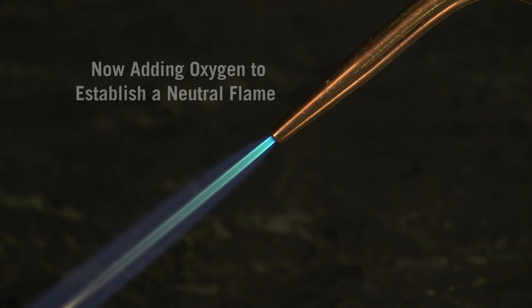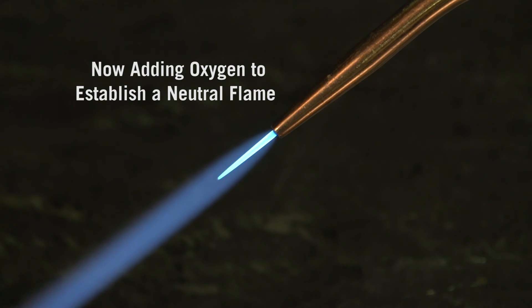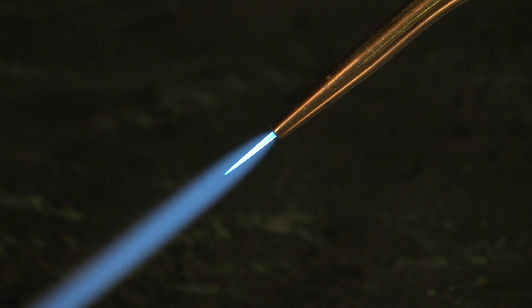To set a neutral flame, adjust the oxygen so that the feather just disappears into the inner cone. The inner cone will have a smooth radius and a deep blue color.